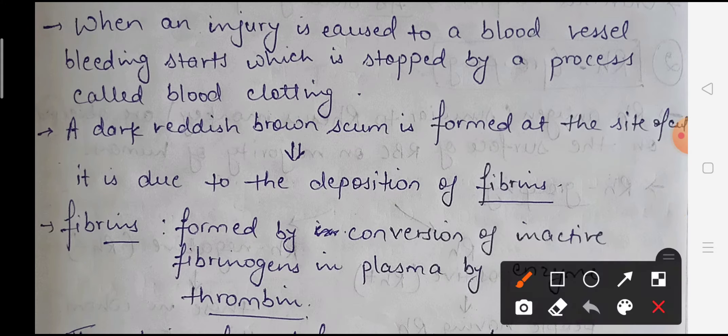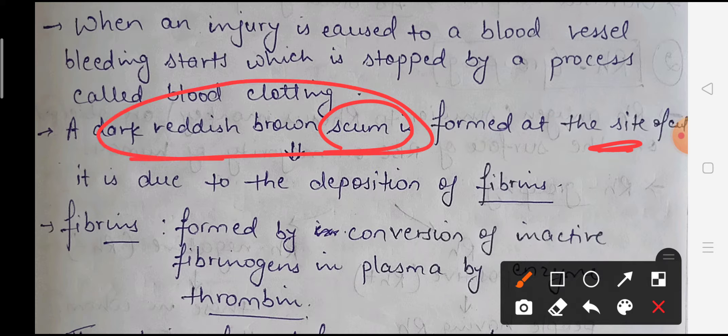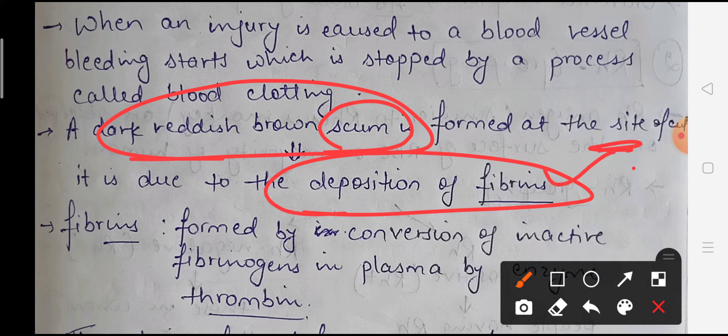Normally a dark red-brown colored scab is seen on the site where we had a cut. This scab is seen due to the deposition of fibrin. We had studied that plasma contains proteins, and one of those proteins was fibrinogen - which is the inactive form - and it converts to its active form called fibrin. This fibrin accumulates at the injury site, which causes blood clotting.